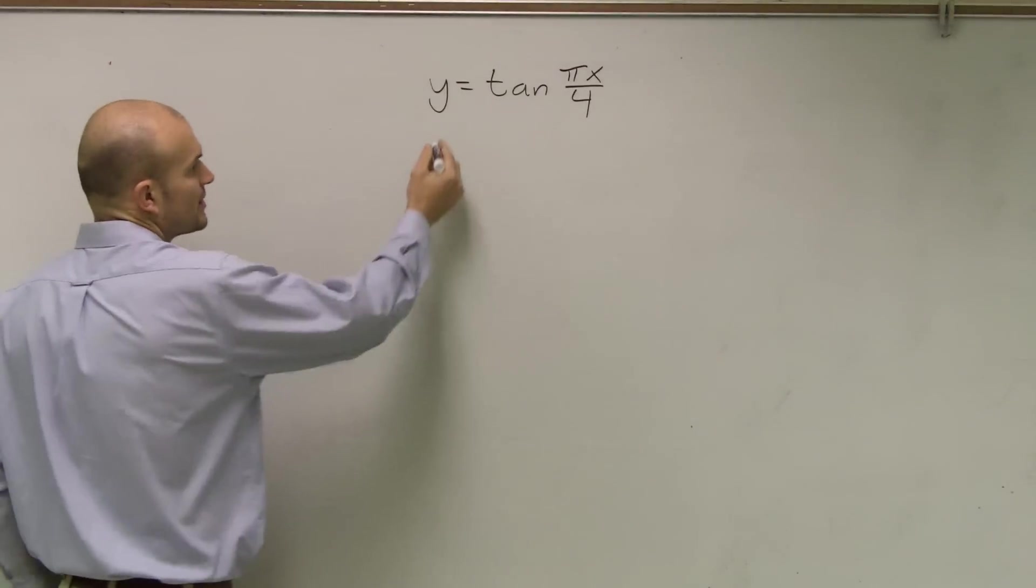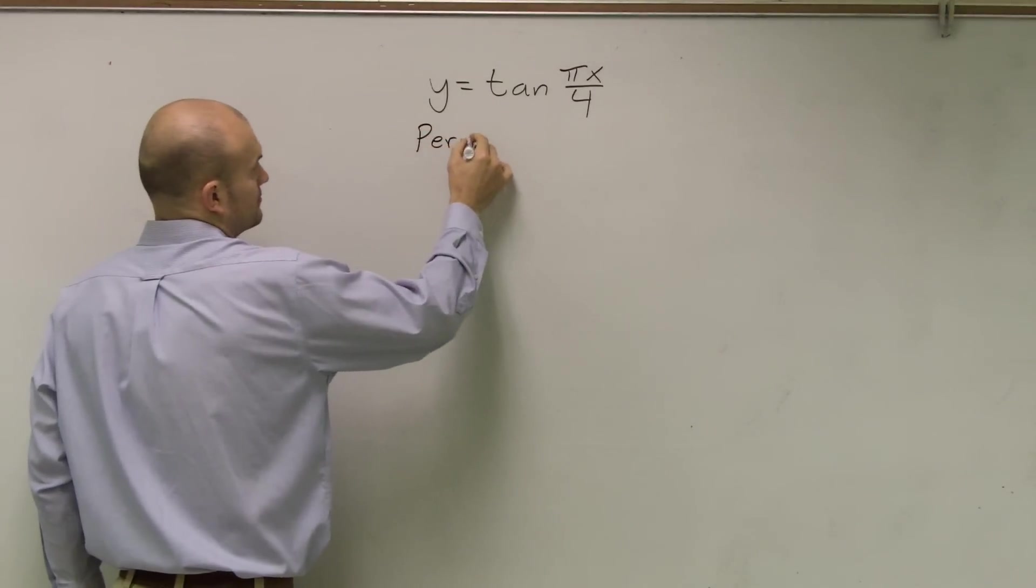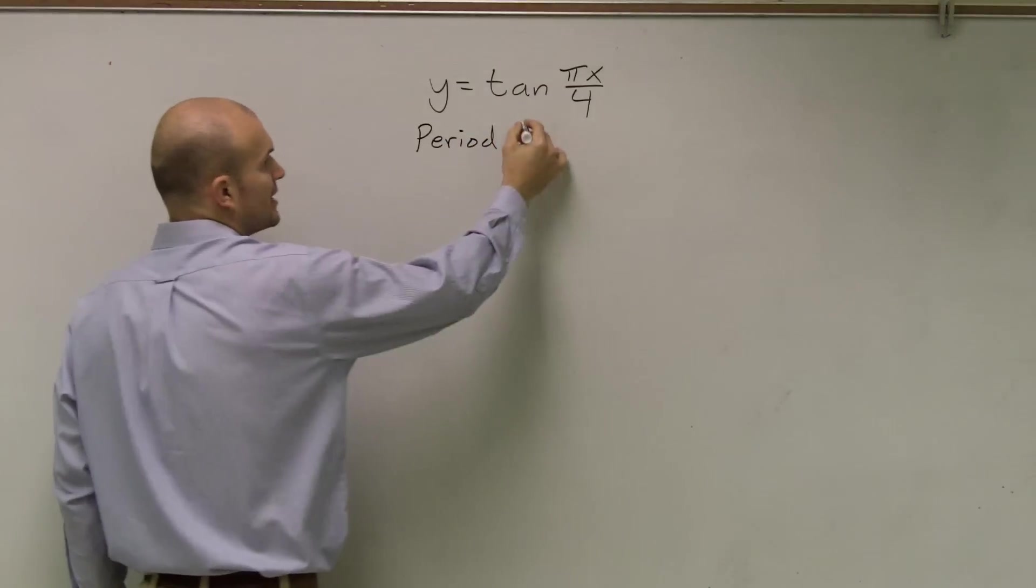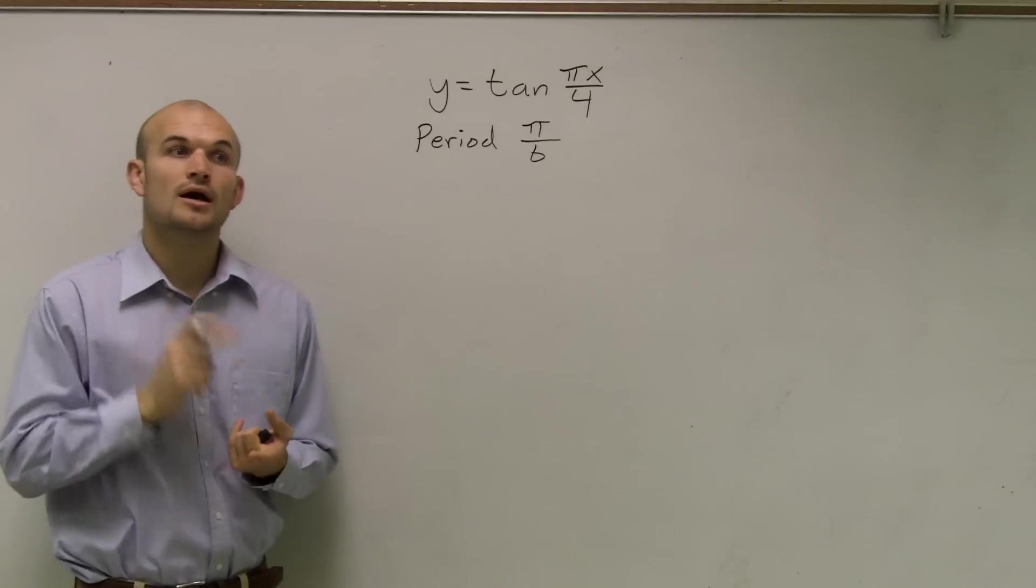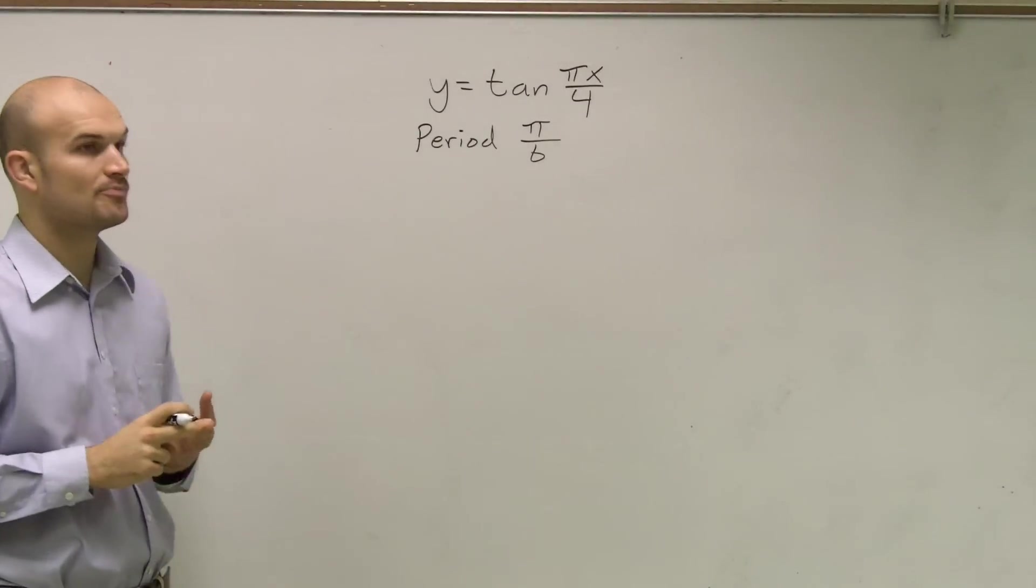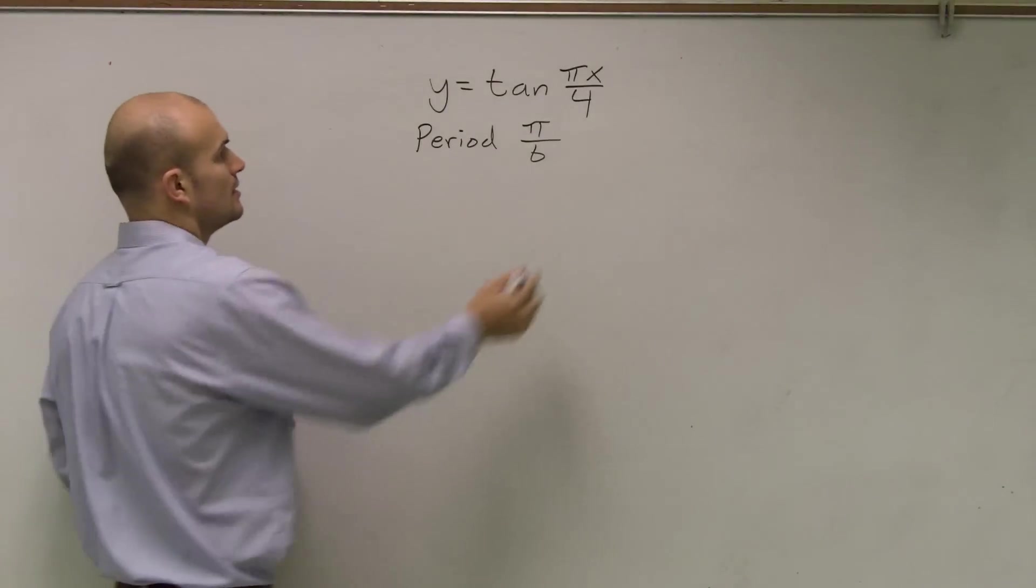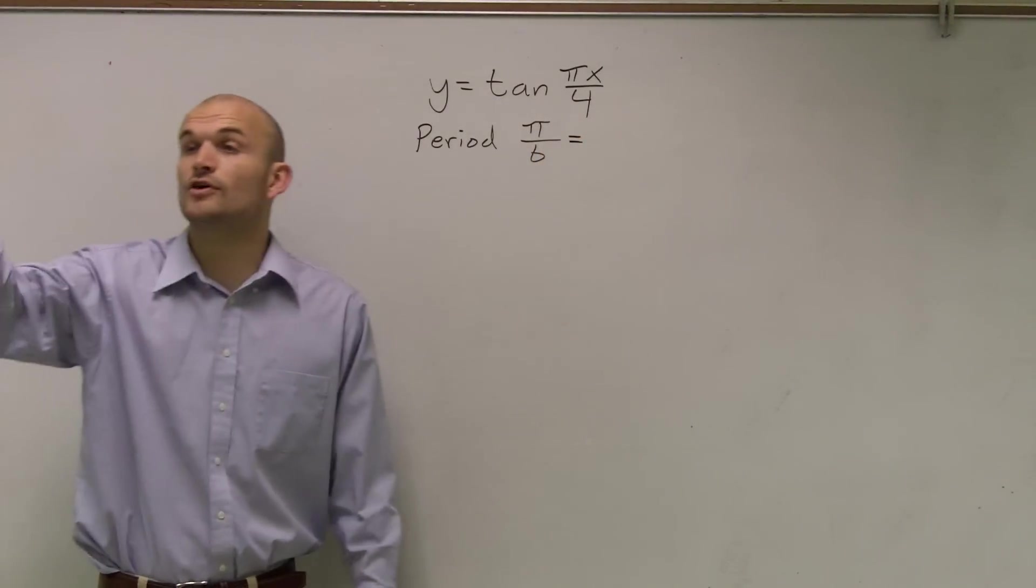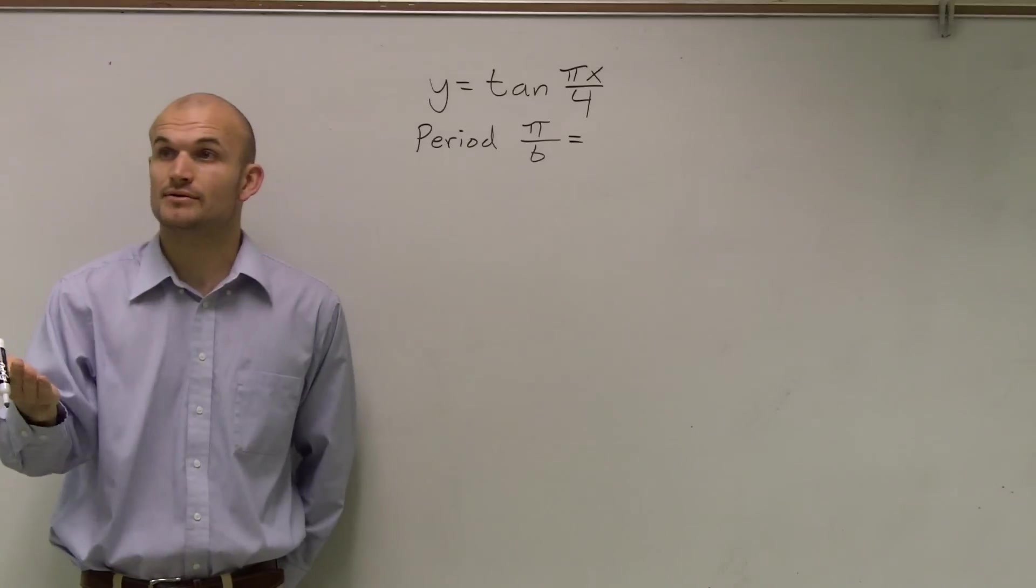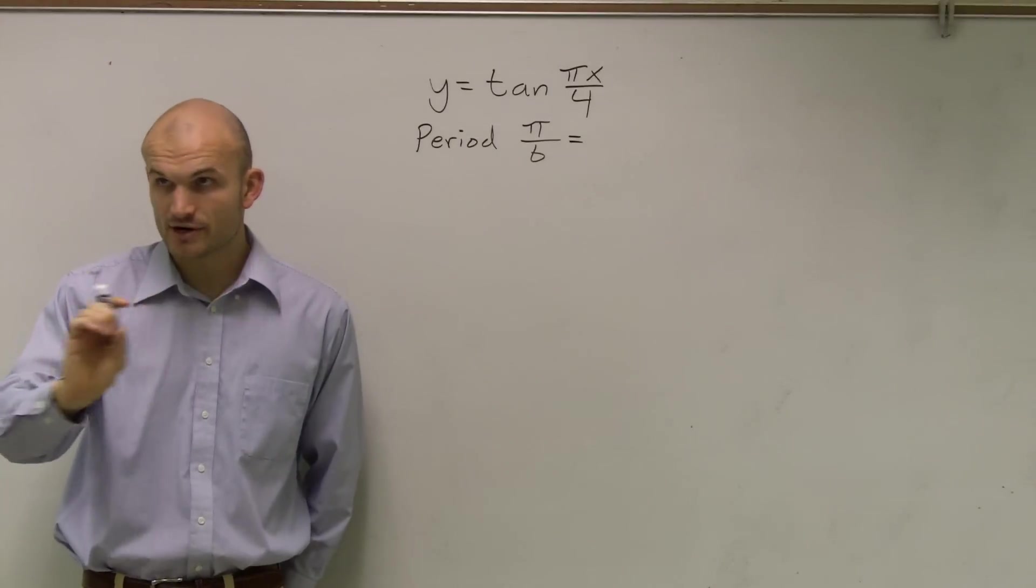So the first thing, let's figure out the period. So remember, period is going to be π over b. So if you can remember, for tangent, cotangent, your period is going to be π over b. I thought it was just π. No, it's π over b. Well, for the parent graph, it's just π, right? For the parent graph, it's π.